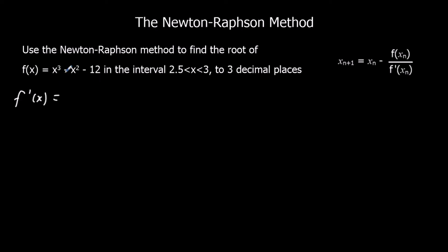We differentiate f(x). That gives us 3x² times by the power, take 1 off the power, minus 2x. Now we've got our formula. If we start with x₀ as, we'll go for the middle again, 2.75.